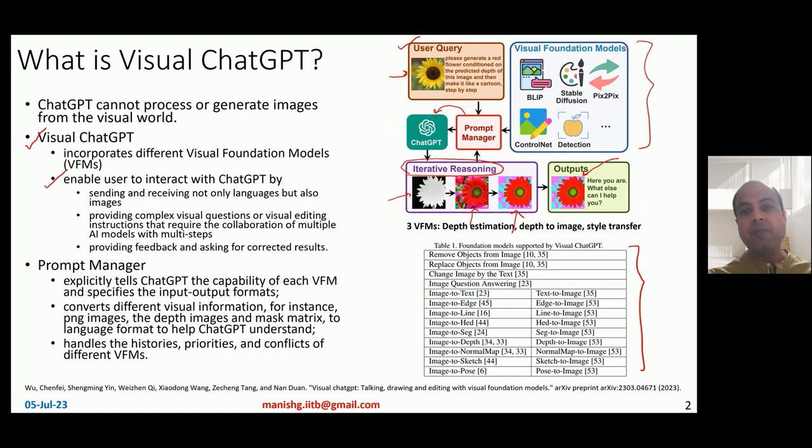The prompt manager is the big deal here. It explicitly tells ChatGPT the capability of each visual foundation model and specifies the input-output format. It also explicitly converts different visual information from the input query or from processed images to language format and tells ChatGPT what is going on. It handles the histories of various iterative reasoning steps, conversation with the user, priorities of visual foundation models, and so on.